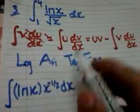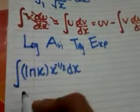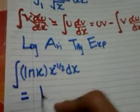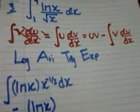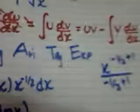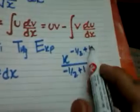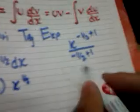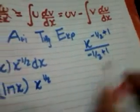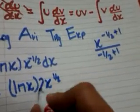uv: u is ln x and v is the integral of x to the power minus 1 by 2. The integral of x to the power minus 1 by 2 is, just add 1, so we get x to the power 1 by 2. 1 divided by 1 by 2 is 2.